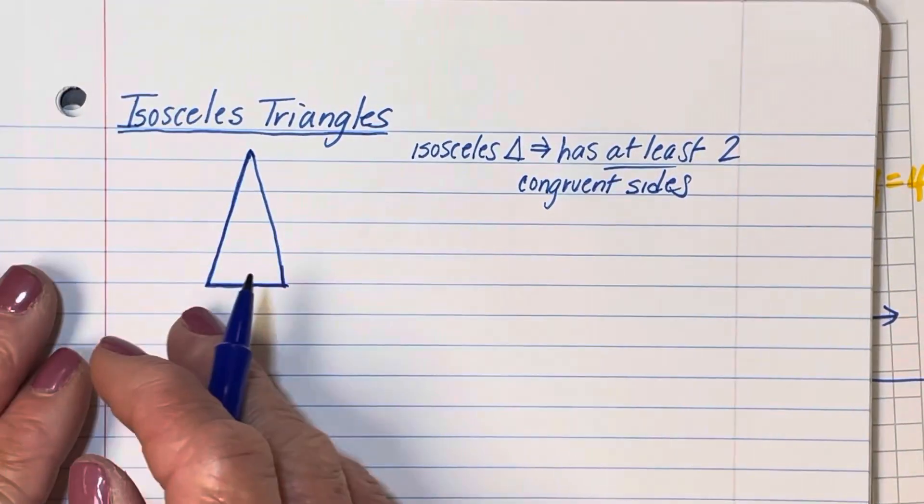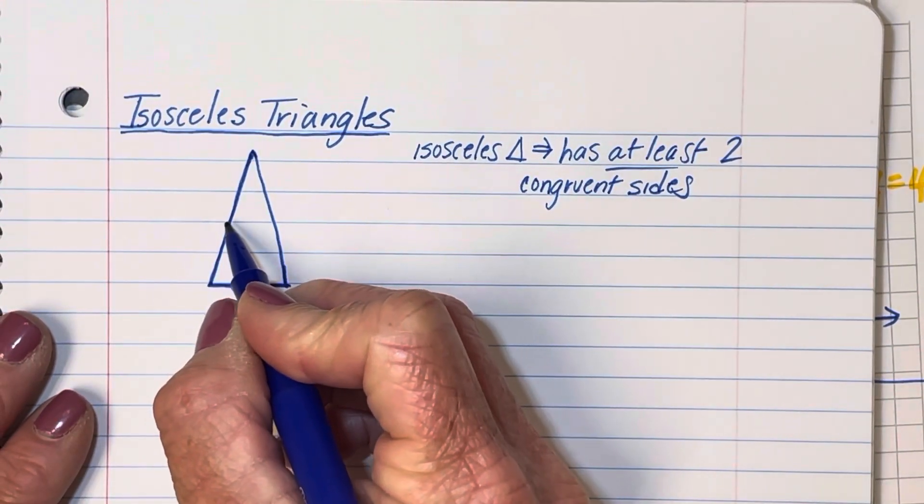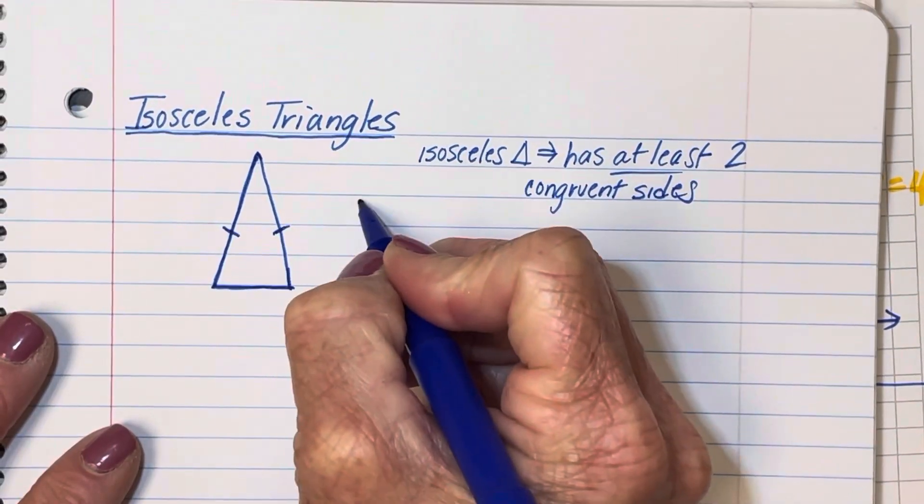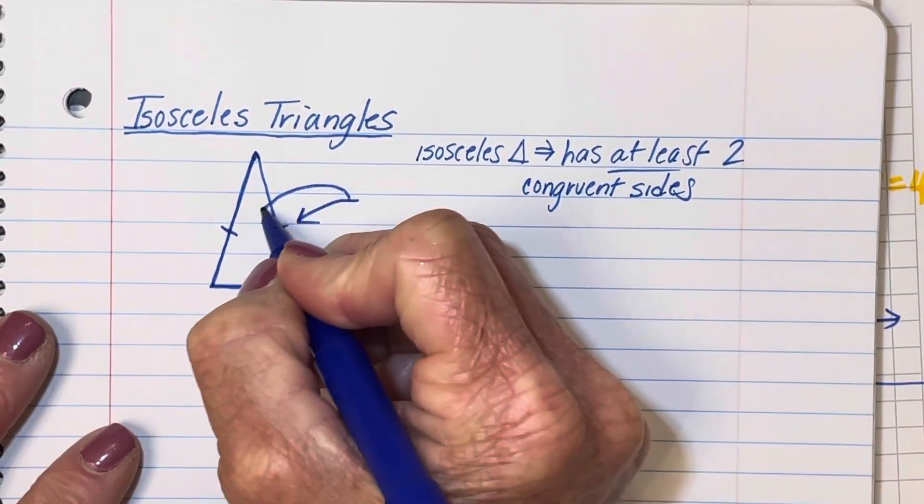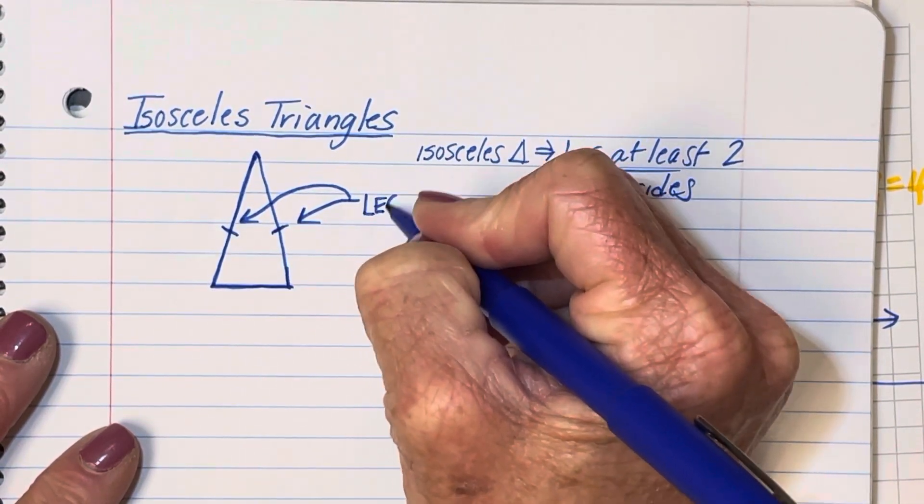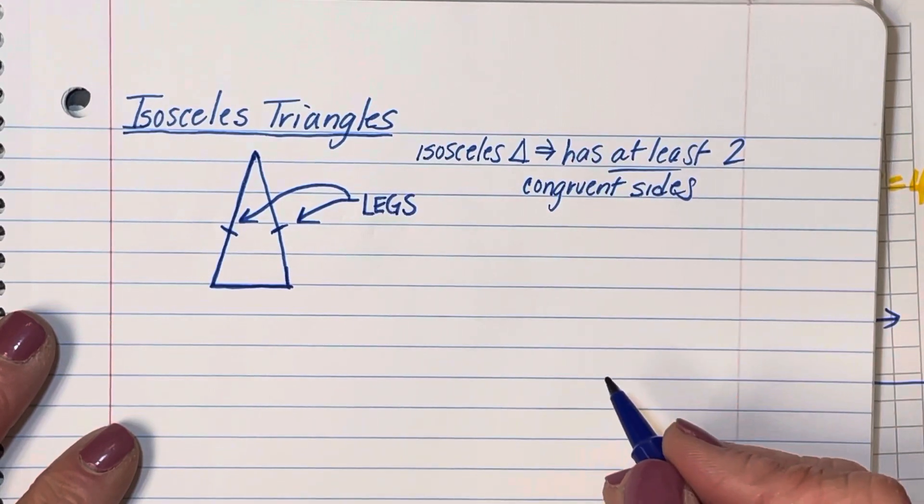Okay, so if this were an isosceles triangle from appearances, these would be the two congruent sides. Those two sides are called, just like in a right triangle, the legs of the triangle.